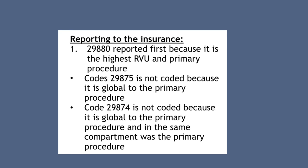This scenario would be coded with 29880 reported first because it has the highest RVU and is the primary procedure. Code 29875 for the limited synovectomy is not coded because it is global to the primary procedure and is in the same compartment. Therefore G0289 for the separate compartment is also not indicated.